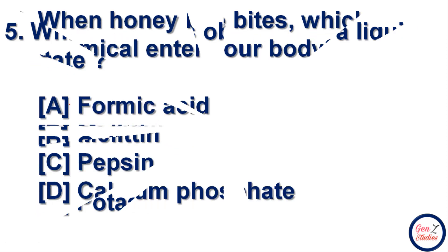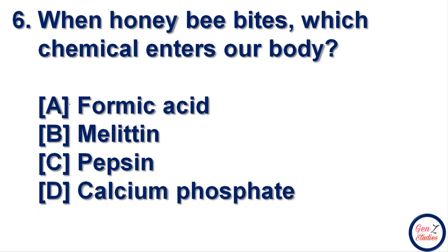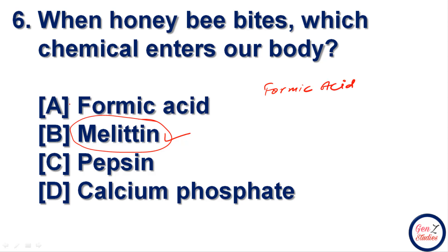Next question: when a honey bee bites, which chemical enters our body? Options are formic acid, melatin, pepsin, and calcium phosphate. The correct answer is melatin — when a honey bee bites us, melatin enters our body. Formic acid is relevant when a red ant bites — in that case, formic acid enters our body.